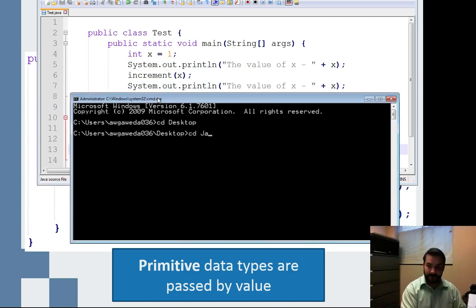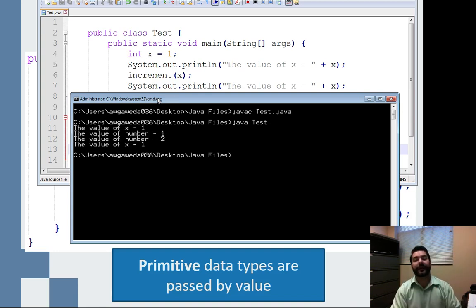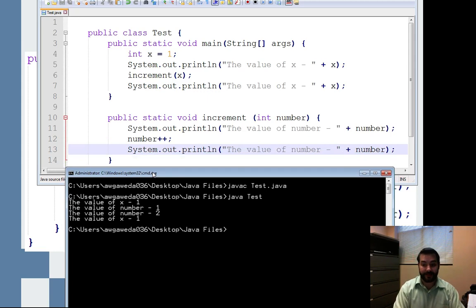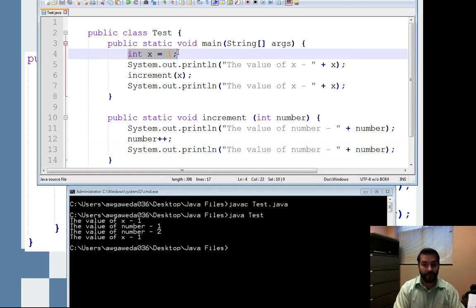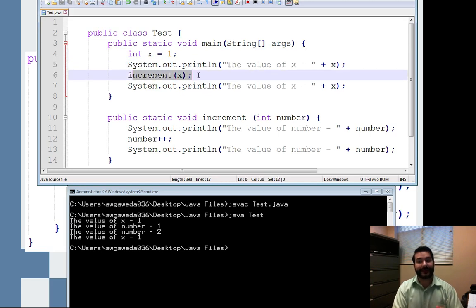So again, java files. I'm going to compile out my test.java file. Compiled out fine. Java test. The value of x is 1. Hopefully, yeah, that's exactly what I was looking at. x was 1, so I printed that out. Then I go into increment.